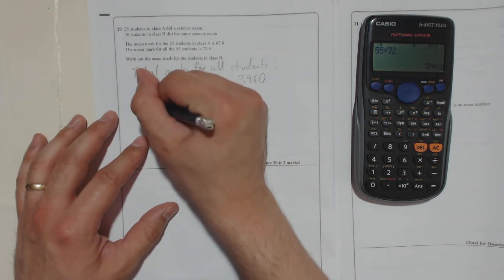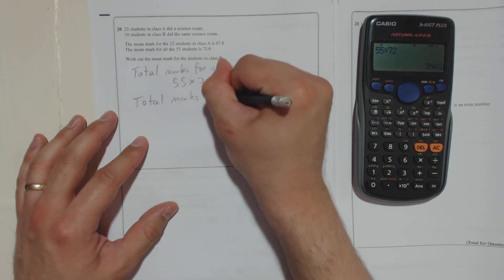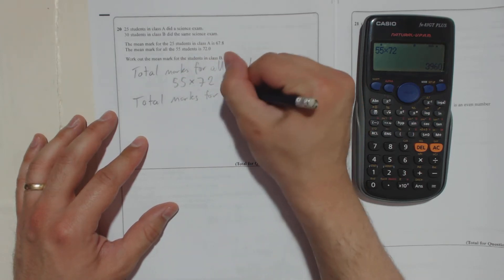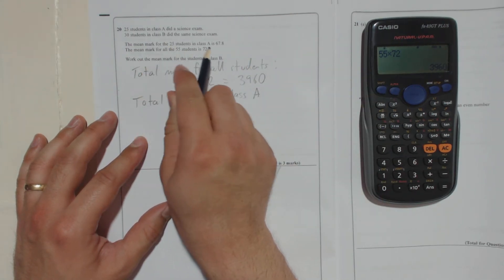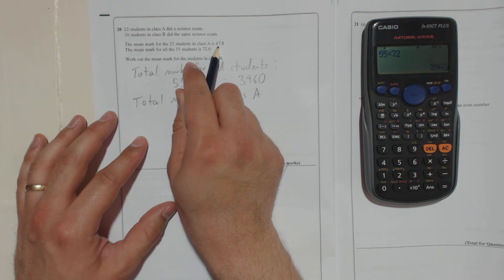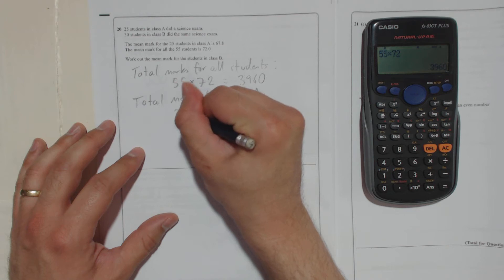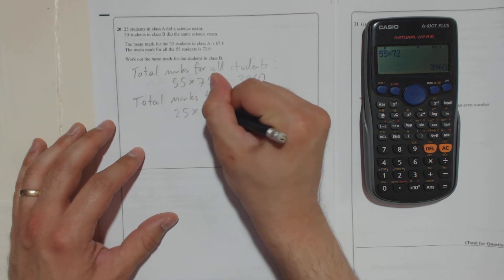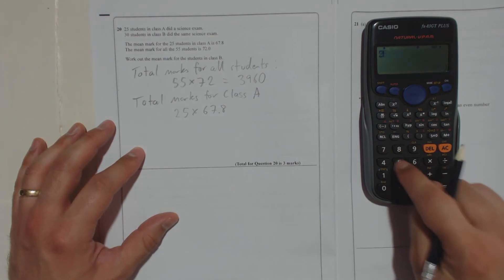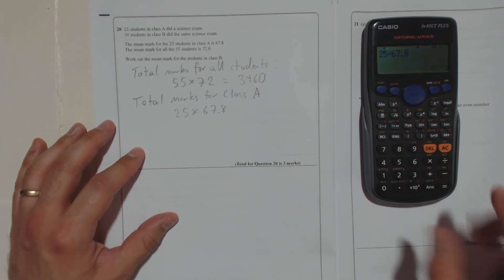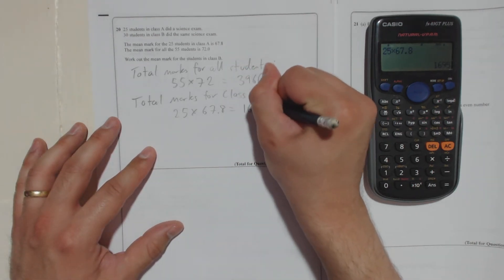So now we'll find the total marks for class A. Again, we've got 25 students in class A and they got a mean of 67.8, so it's as if every student got 67.8. You're going to take 25 and times it by 67.8. So 25 times 67.8 gives us 1695.